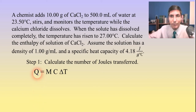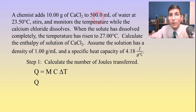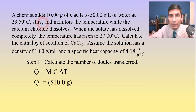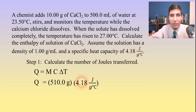Q is the amount of heat — we're solving for Q. For M, the mass of the system: we have 10 grams of calcium chloride and 500 milliliters, or 500 grams of water given the density, so that's a total of 510 grams of solution. For C, the specific heat, the solution has a specific heat of 4.18 joules per gram degree Celsius — we're assuming it's the same as that of water.